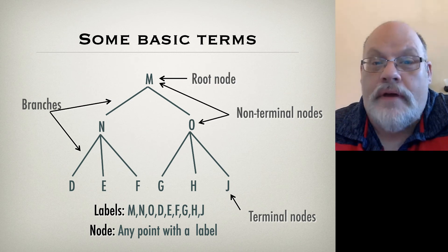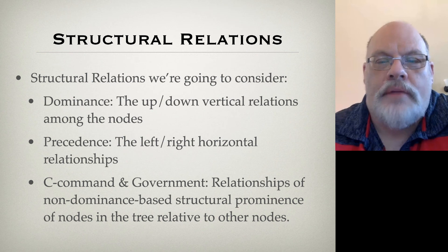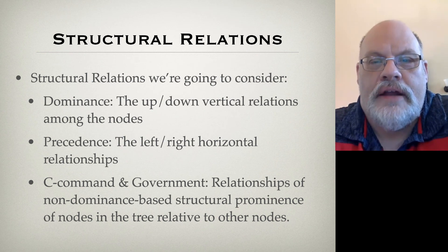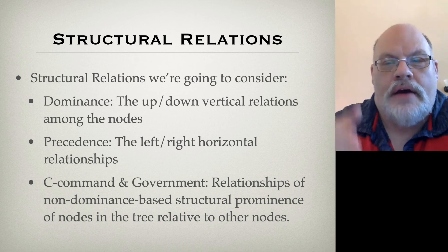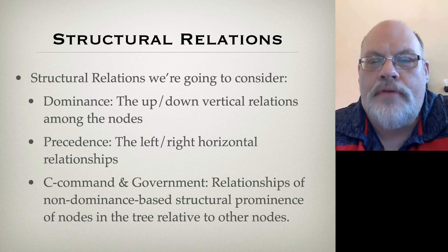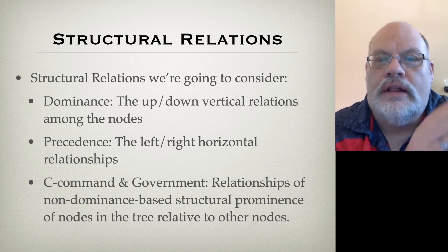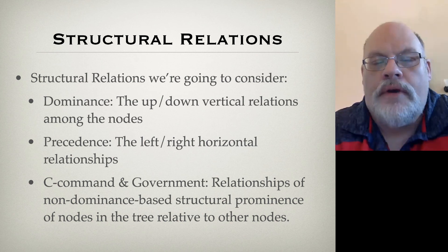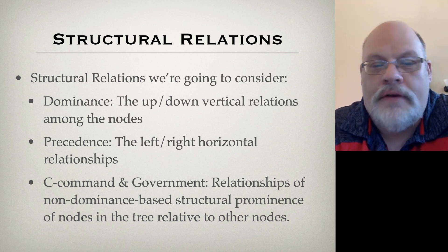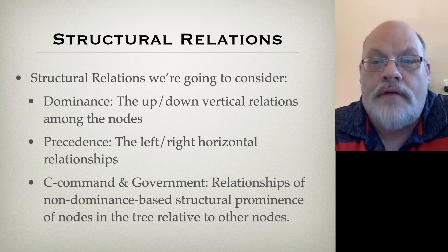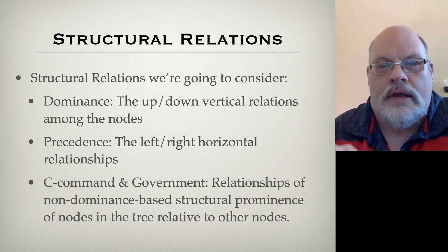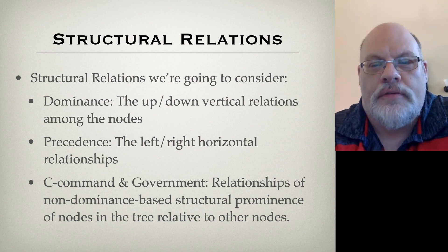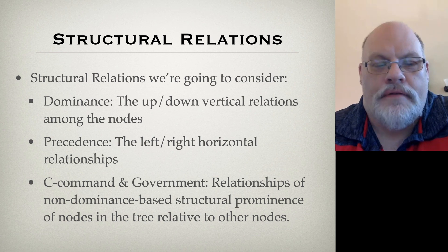These are the parts of a tree. Now we're going to talk about three structural relations in the next few videos. We're going to talk about dominance, which is the up-down relationship in the tree. We're going to talk about precedence, which is the left-to-right relationship in the tree. And we're going to talk about one that may not be so obvious called C-command and its derivative government, which represent hierarchical relations in the tree that are not strictly in terms of dominance. So those are the topics for the next few videos.